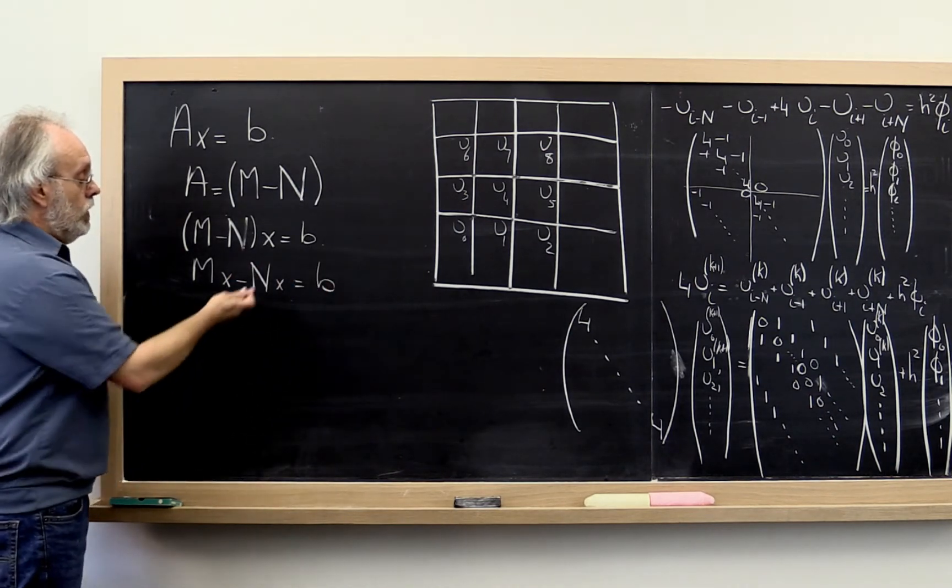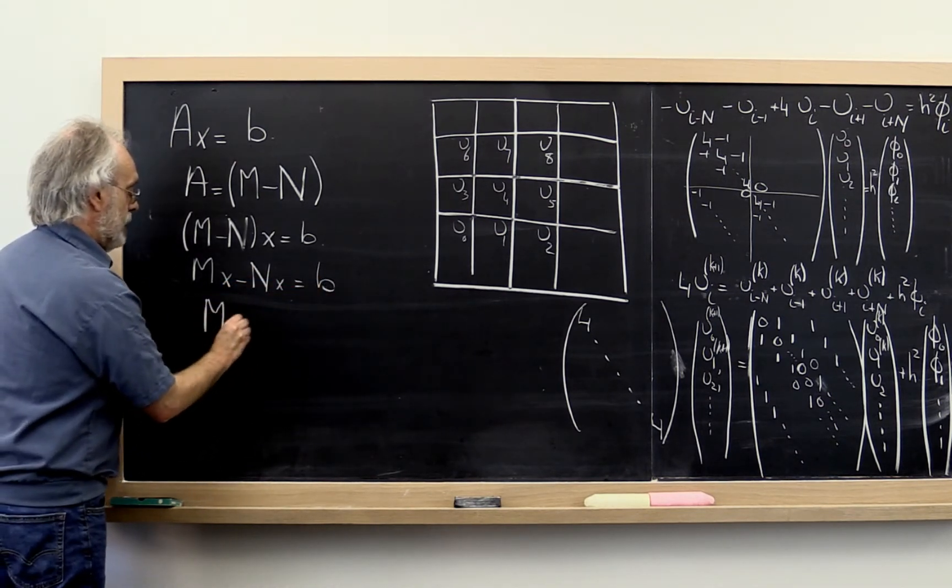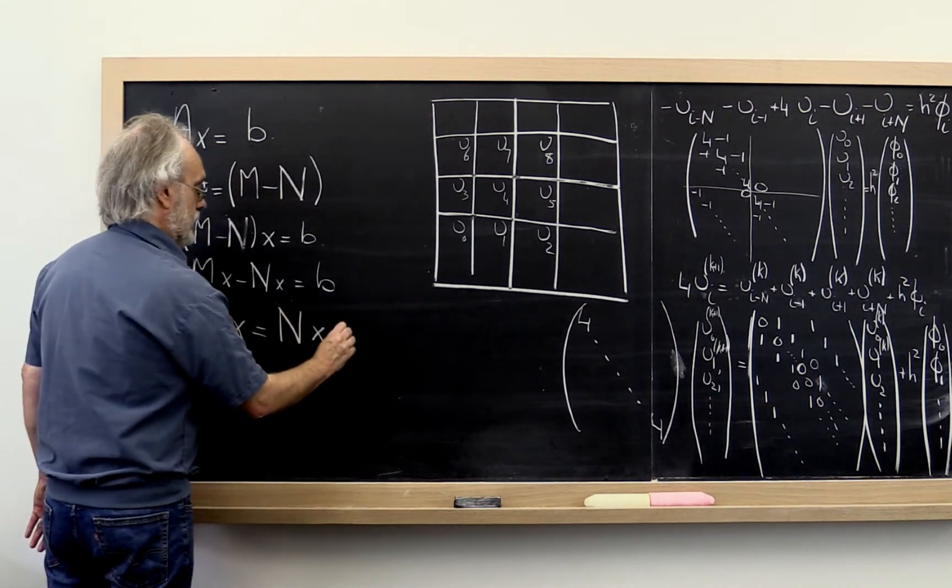And then we can say, well, what if we take the N times X to the other side? Then I get M times X is equal to N times X plus B.